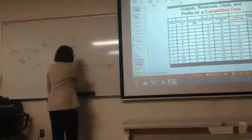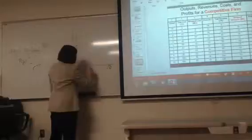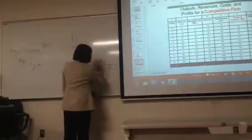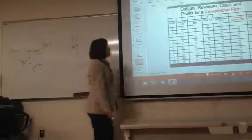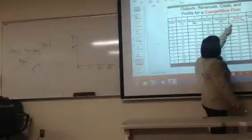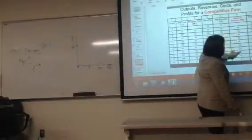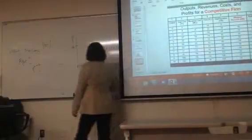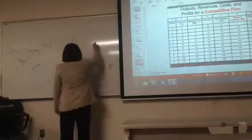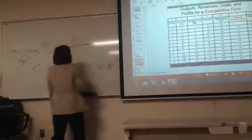Now, whether quantity is 0, whether quantity is 5, whether quantity is, let's say, 10, what's happening to marginal revenue? Marginal revenue is always constant at 14, right? So whether it's 5, whether it's 10, marginal revenue is all 14.